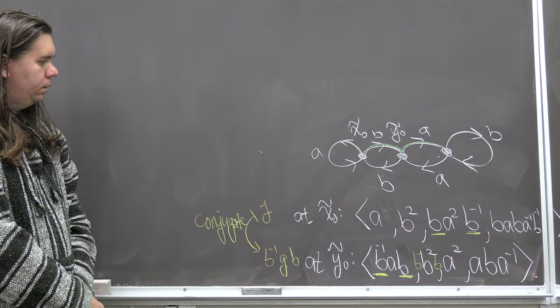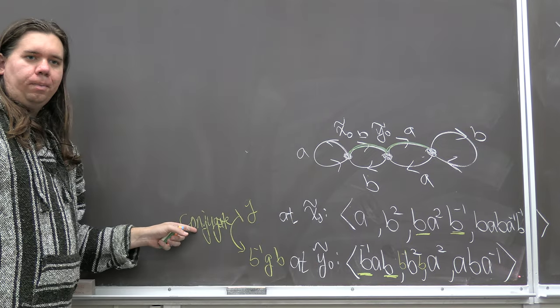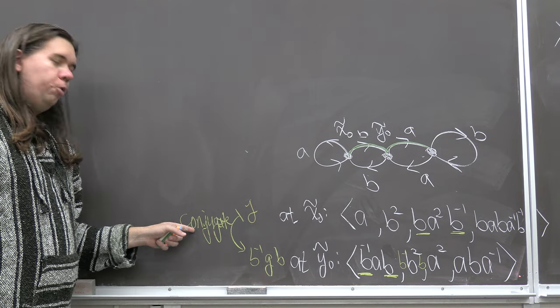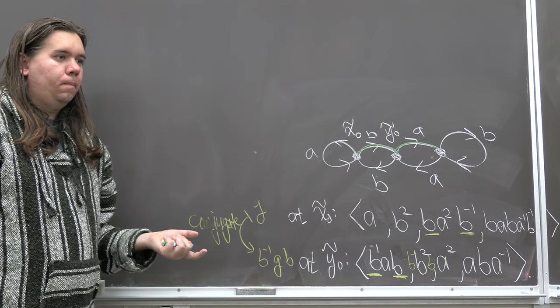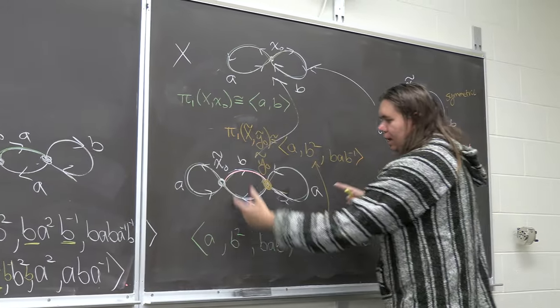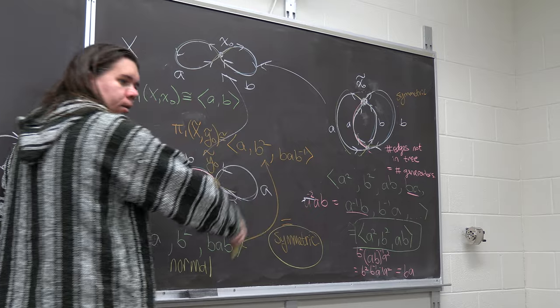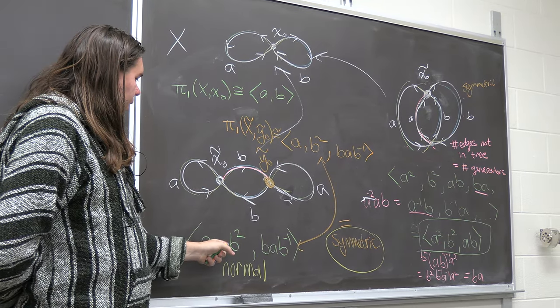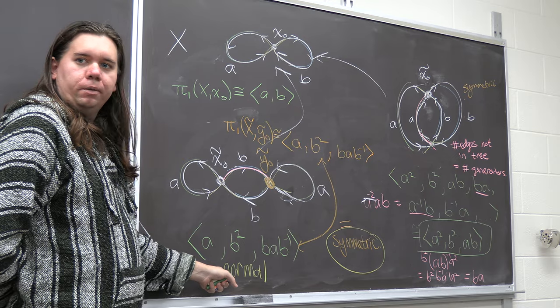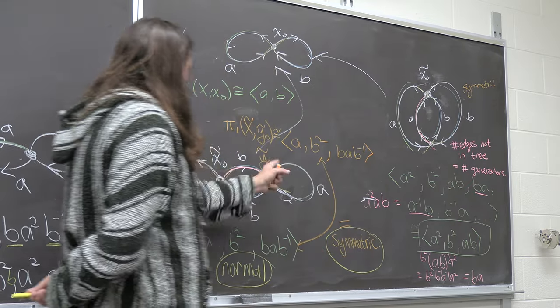So when are the two presentations the same? They're the same when conjugation doesn't change the subgroup — that is, when the subgroup is normal. A normal subgroup corresponds exactly to a symmetric covering space: if the covering space is symmetric, changing the base point doesn't change the fundamental group, so the subgroup must be normal.